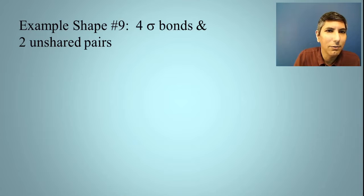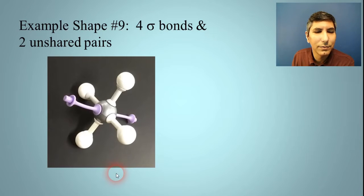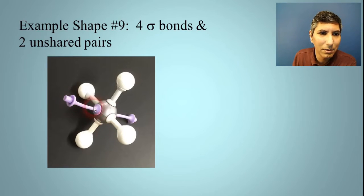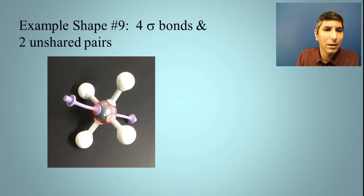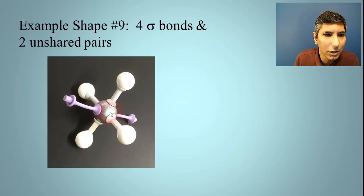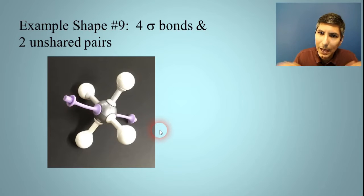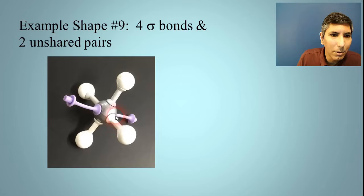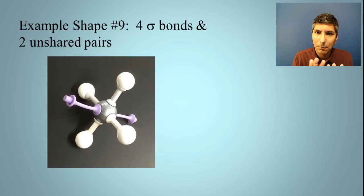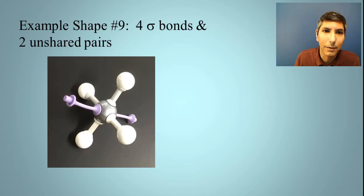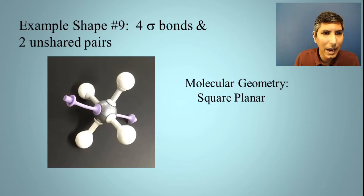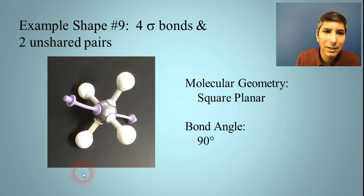Our last model: four sigma bonds and two unshared pairs. The two unshared pairs are configured as far away from each other as possible, as VSEPR theory tells us — they repel. Since you can't see the unshared pairs, what you'd observe is a flat, square structure. This is called square planar, and every bond angle is a perfect perpendicular 90 degrees.